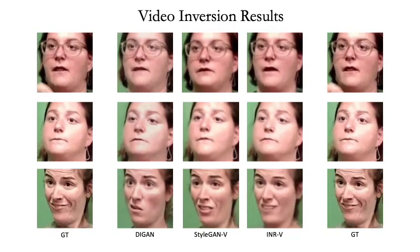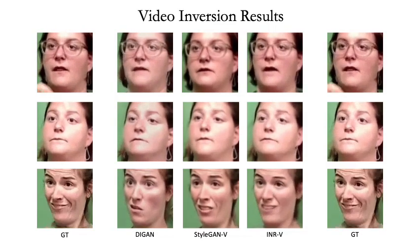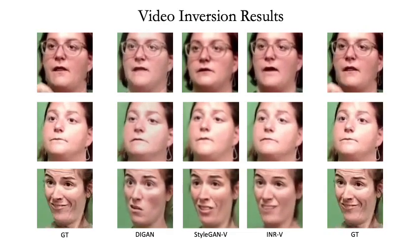Now we show some qualitative results, starting with vanilla inversion. As can be seen, both StyleGANV and DiGAN have repetitive motions. Finer pose changes such as sudden head movement in the first example and mouth opening in the second example are not captured in both methods. INRV, on the other hand, has full motions. This is an easy task for INRV as it directly encodes full motion and content in a single latent. Other methods have separate content and motion, making the task of inverting spatiotemporal video signals hard, so their output is less coherent and does not match the given ground truth as accurately as INRV does. Please note that all the videos used are outside of the training set.